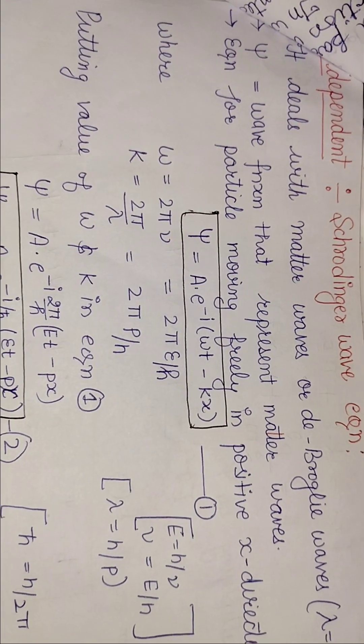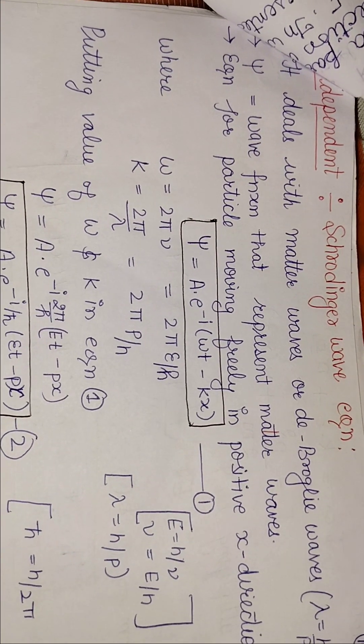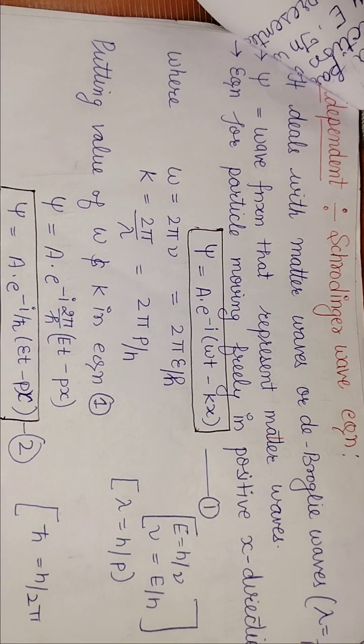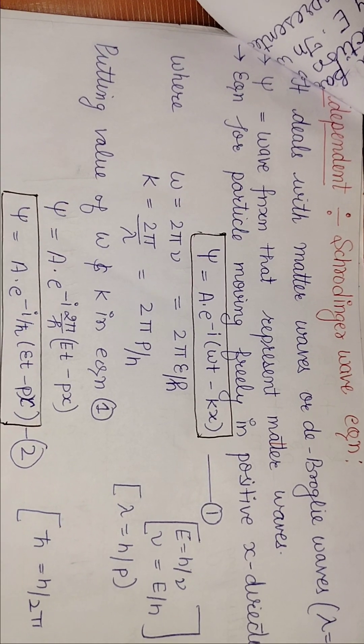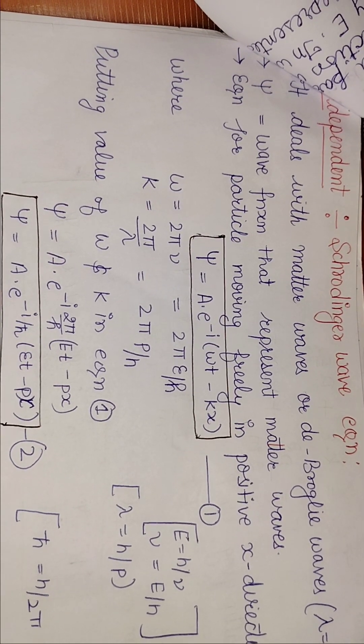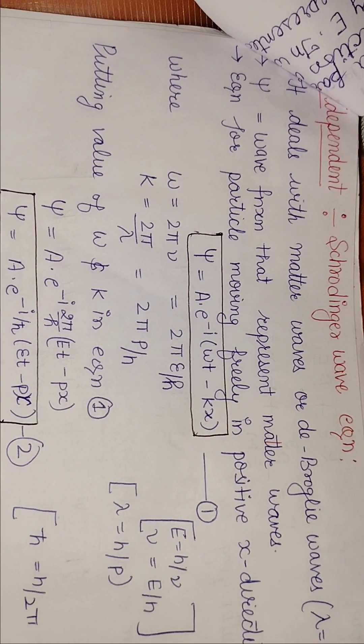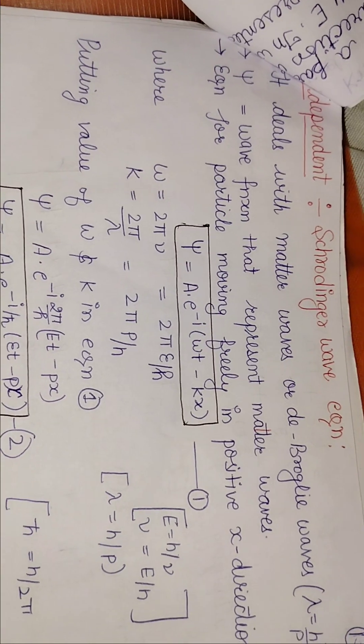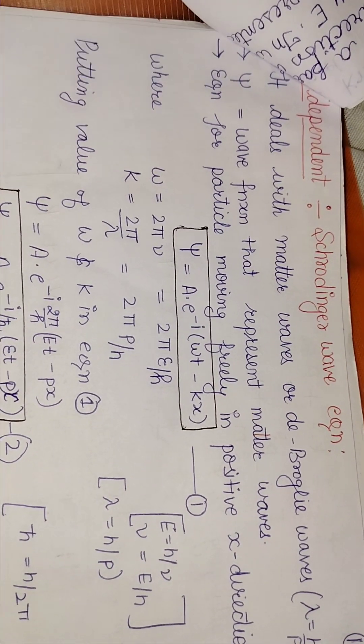First of all, it comes to deal with matter waves or de Broglie waves. And psi (ψ), which is the wave function, is representing matter waves. We are going to deal with matter waves and what is representing them is psi.